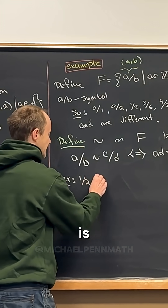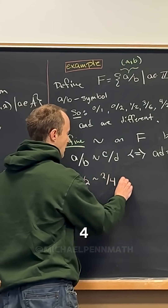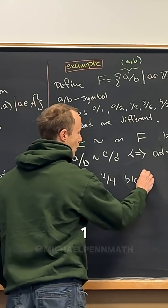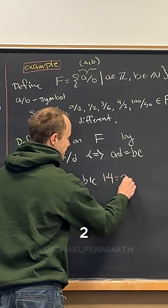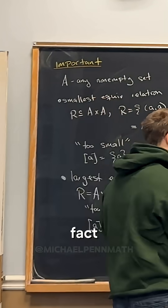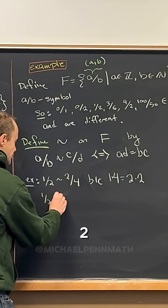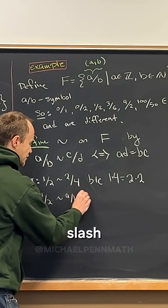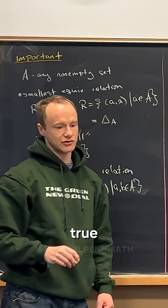Let's look at a little example of this. One slash two is equivalent to two slash four because one times four equals two times two. And in fact, one slash two is equivalent to a slash b if and only if what is true?